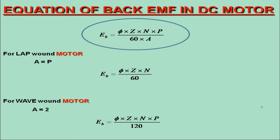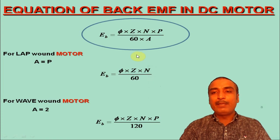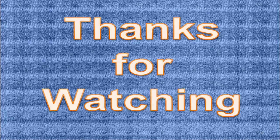It is also worth notable that for a given DC machine, the quantities Z, P and A are constants. Therefore, generated EMF Eg or back EMF Eb is directly proportional to the flux per pole and speed of armature rotation. Thanks for watching. Goodbye.